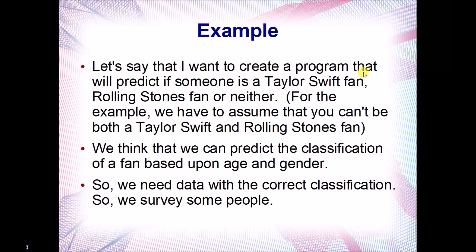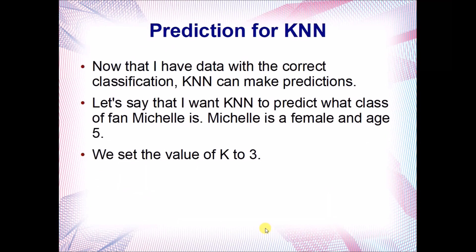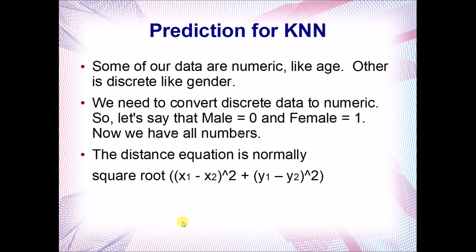First we need data with the correct classification, so let's assume we go out and survey some people. We have 10 people surveyed — we know their age, gender, and what type of fan they are. Now let's say I want KNN to predict the class of a fan named Michelle, who is female with an age of five, and K is set to three. Some of our data is numeric like age, but other is discrete like gender — M and F — so we first convert all discrete data to numeric. Male is zero, female is one.